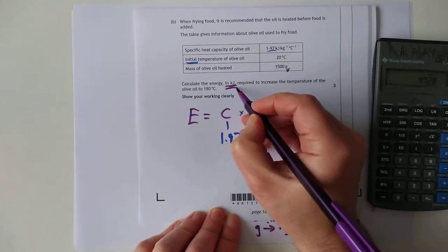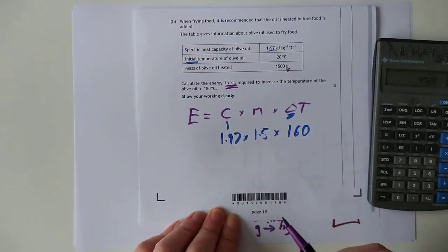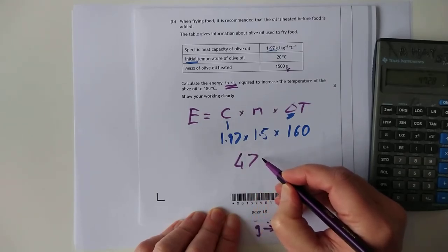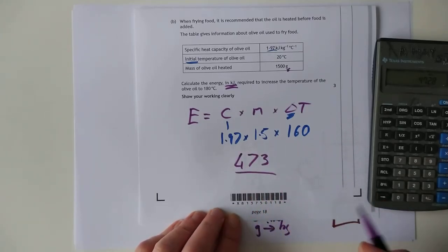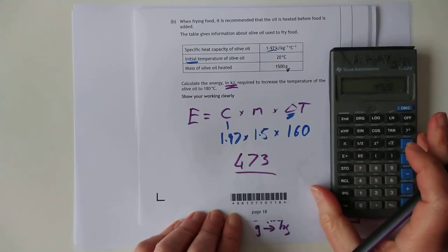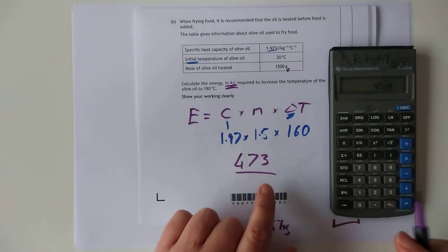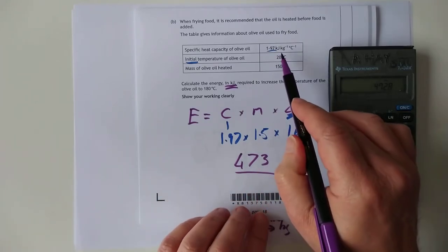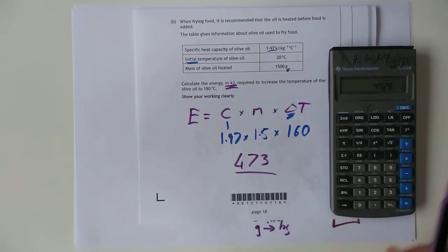473 is the energy in kilojoules. You don't even need the unit because it gives it in kilojoules. If you look back at my first video where I warned about units in chemistry, I suggest not to put them in your answers. If it gives you the unit there, don't put an energy unit in here because you could easily screw it up. Just don't do it. 473, job's done.